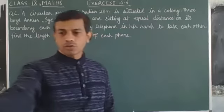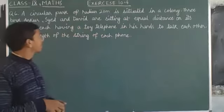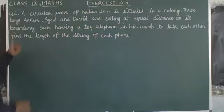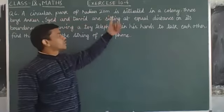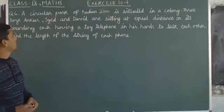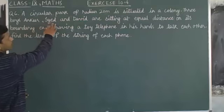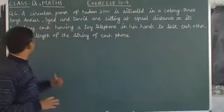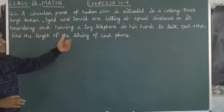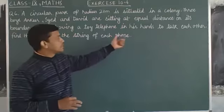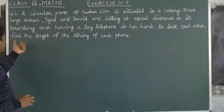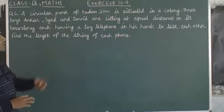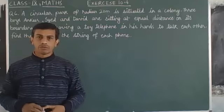Now let's move to question number 6. It states that a circular park of radius 20 meters is situated in a colony. Three boys, Ankur, Syed, and David, are sitting at equal distances on its boundary, each having a toy telephone in his hands to talk to each other. For all this, we have to find the length of the string of each phone.